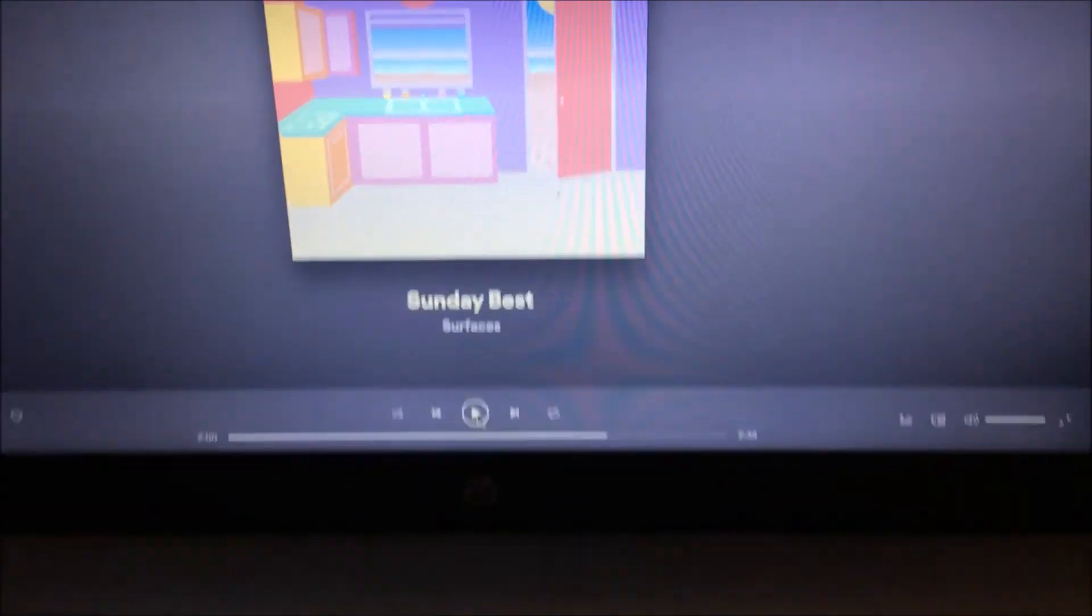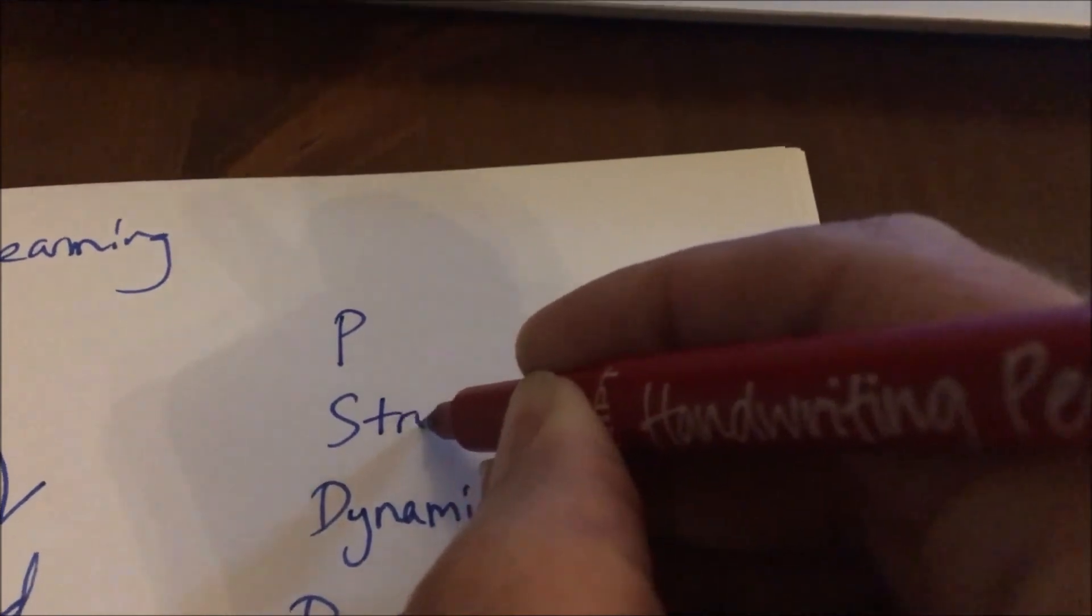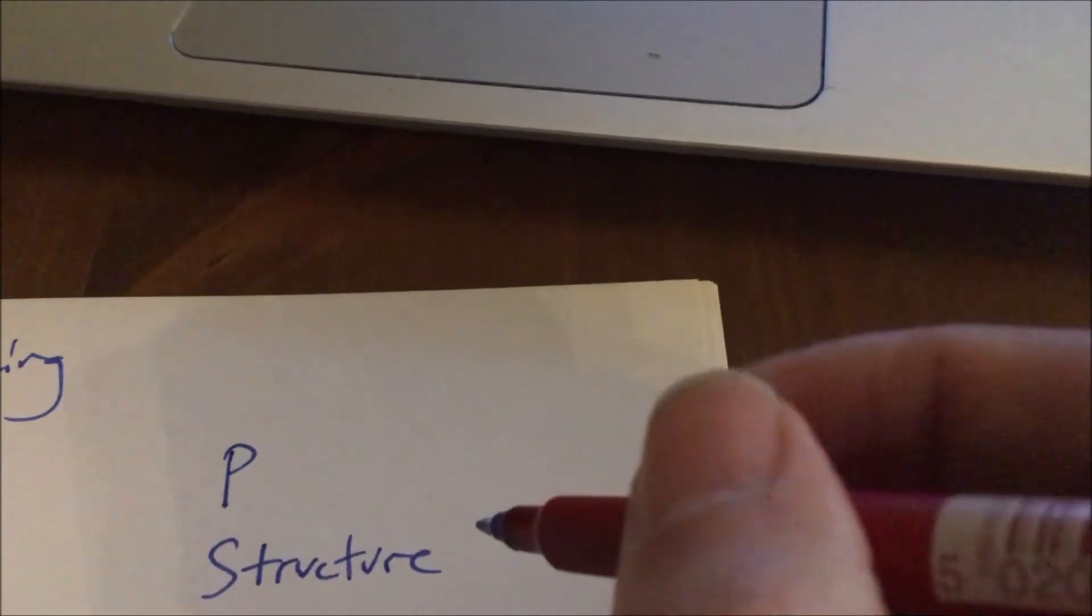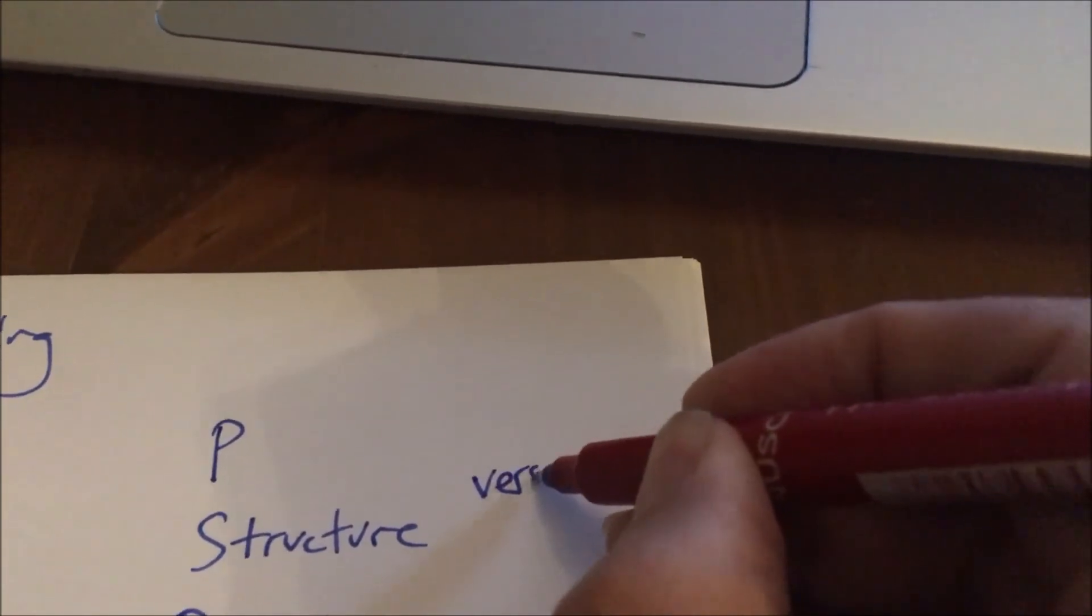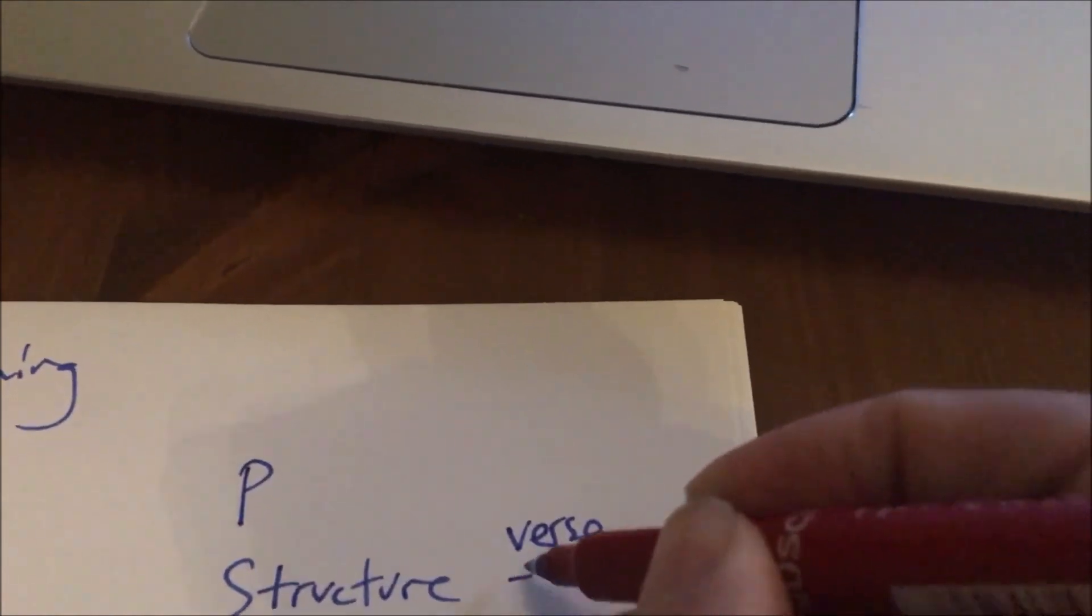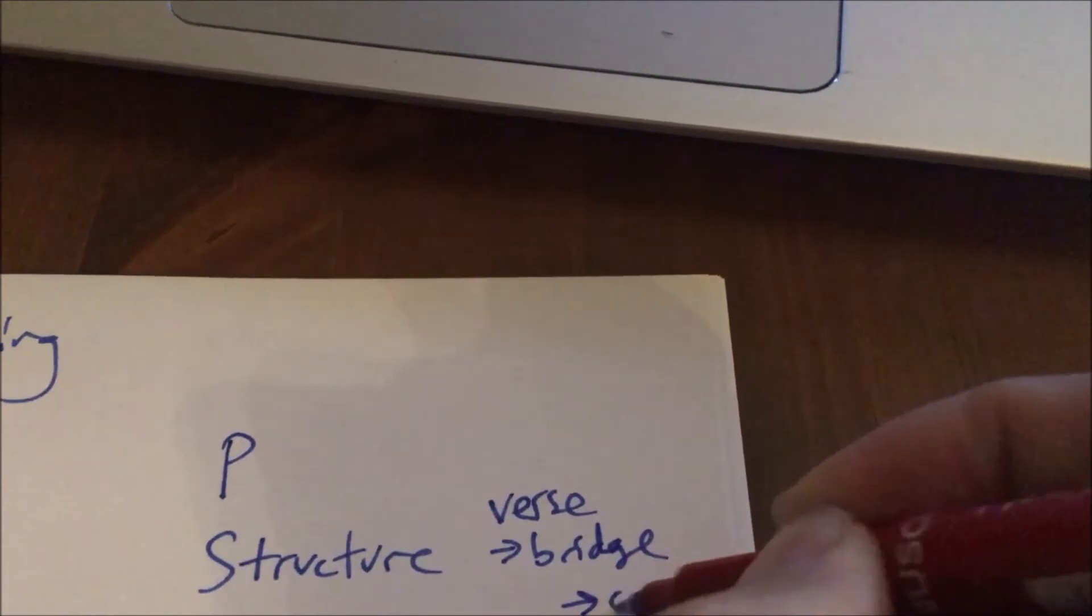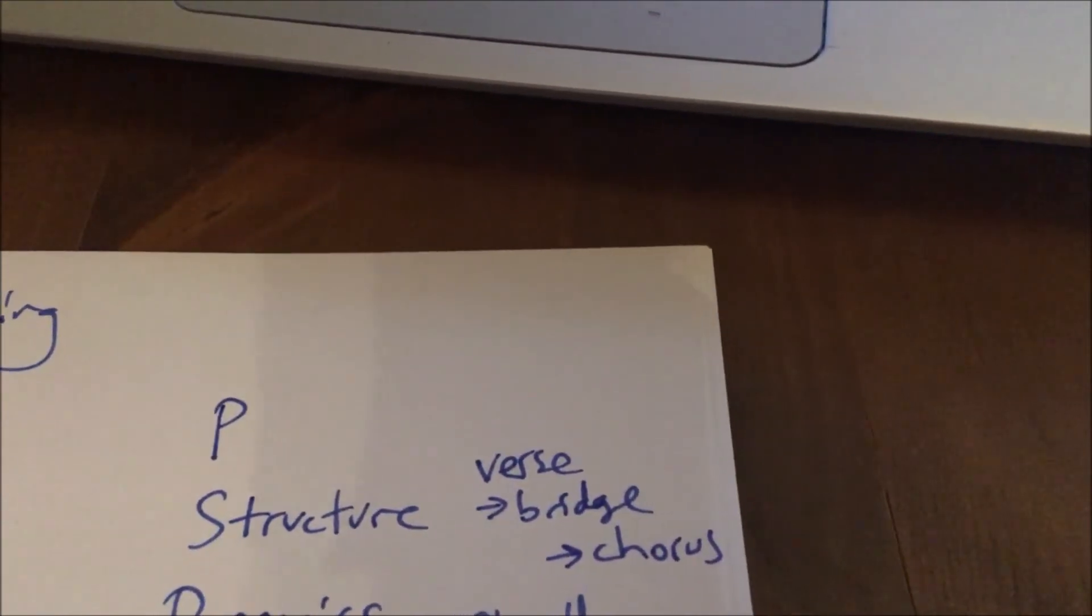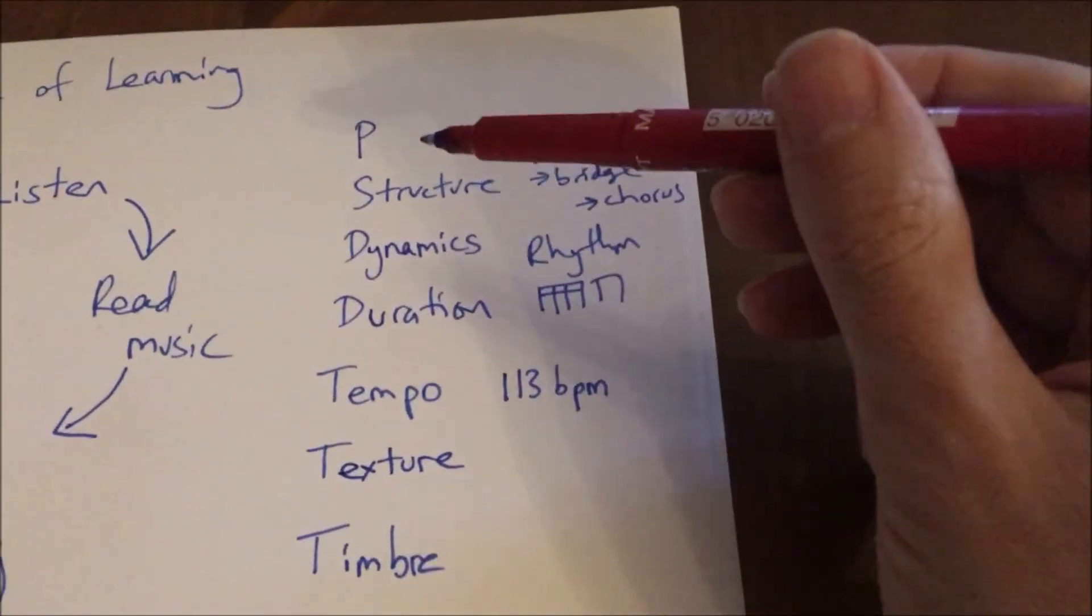We're back into the chorus, and that brings us to the next musical dimension, which is structure. We can say that the structure of this piece of music is going from a verse to a bridge and then into a chorus, which is pretty normal for a pop song. Now you've got your musical dimensions there.